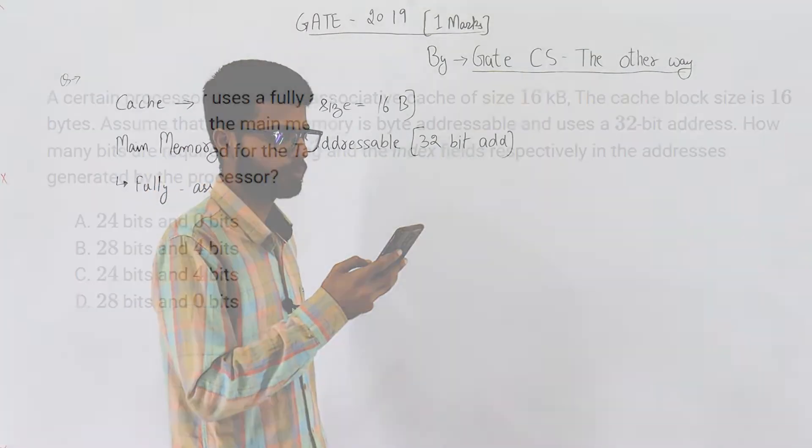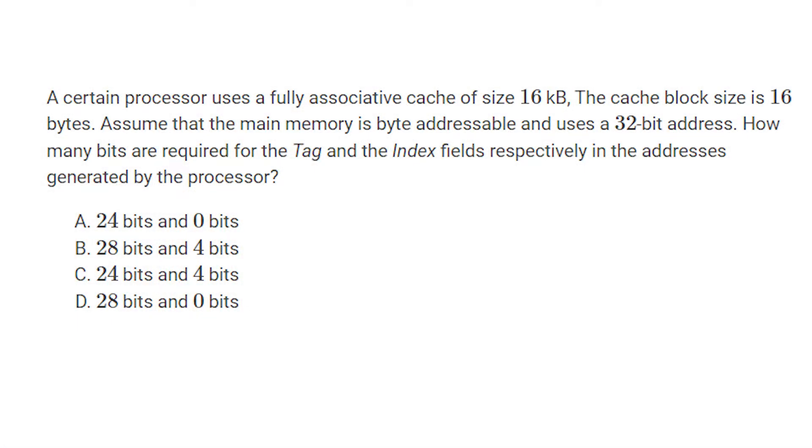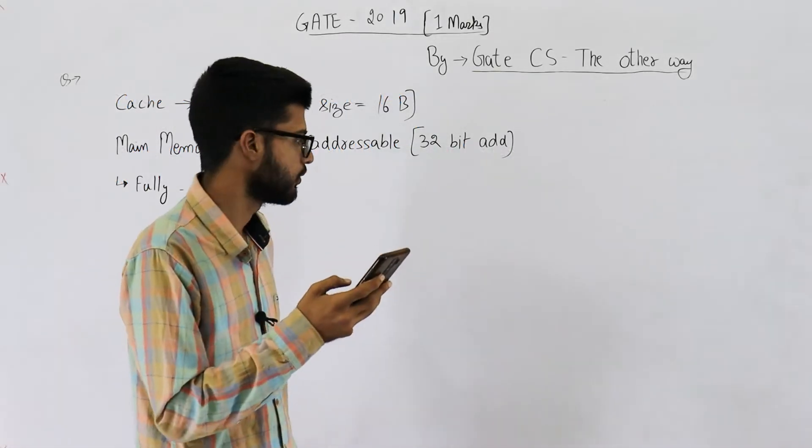A certain processor uses a fully associative cache of 16 KB. The cache block size is 16 bytes. Assume that the main memory is byte addressable and uses a 32-bit address. How many bits are required for the tag and index fields respectively in the addresses generated by the processor?